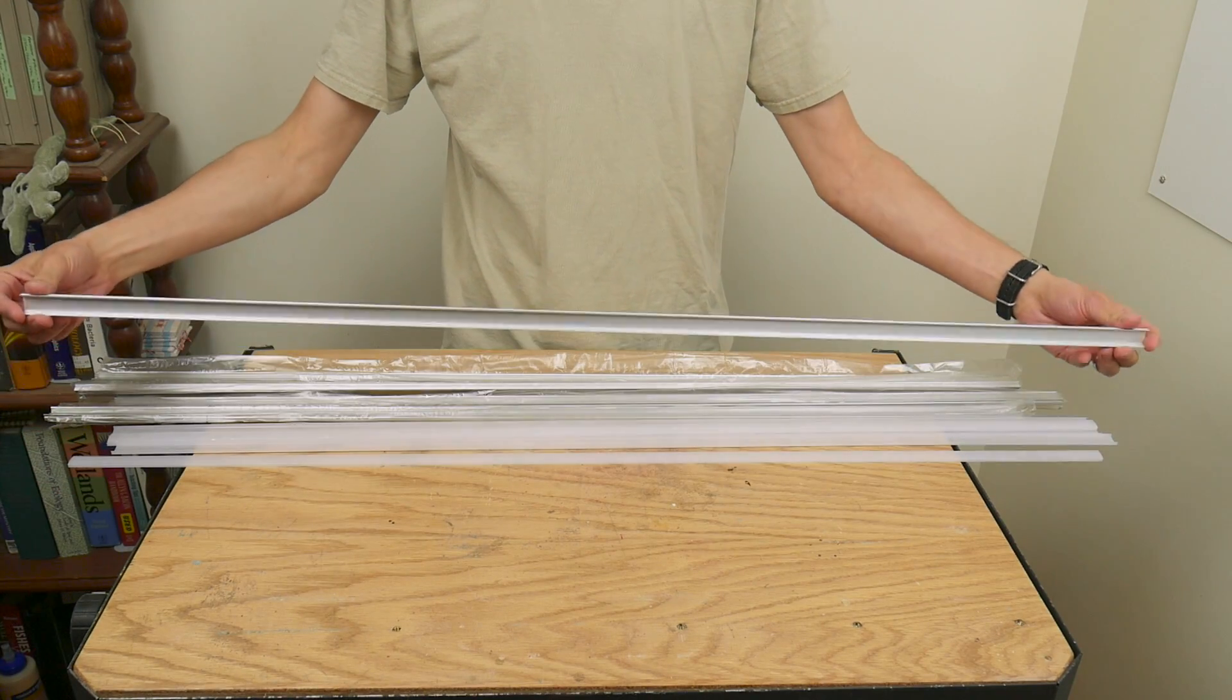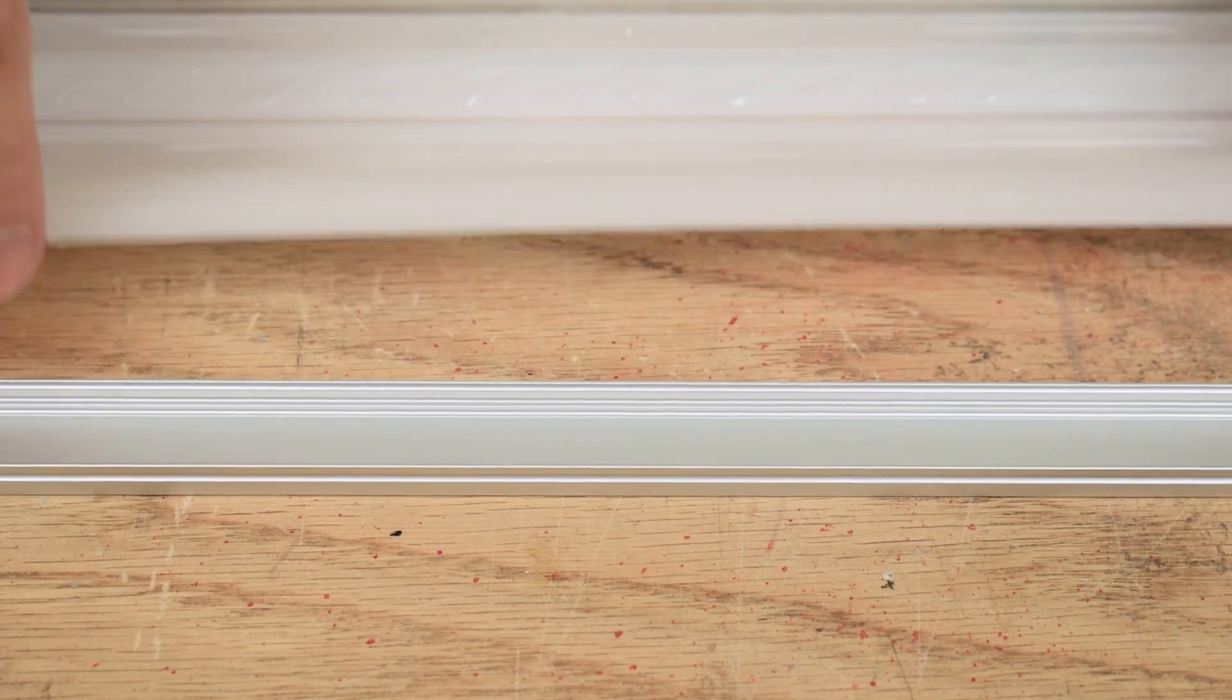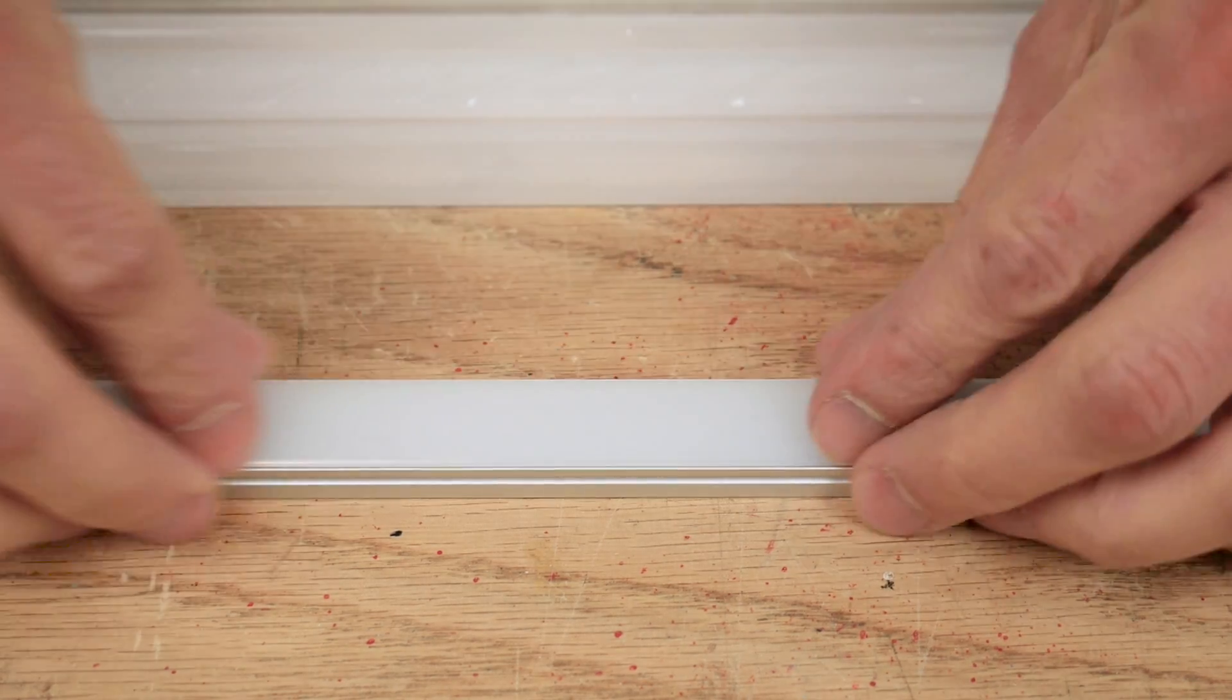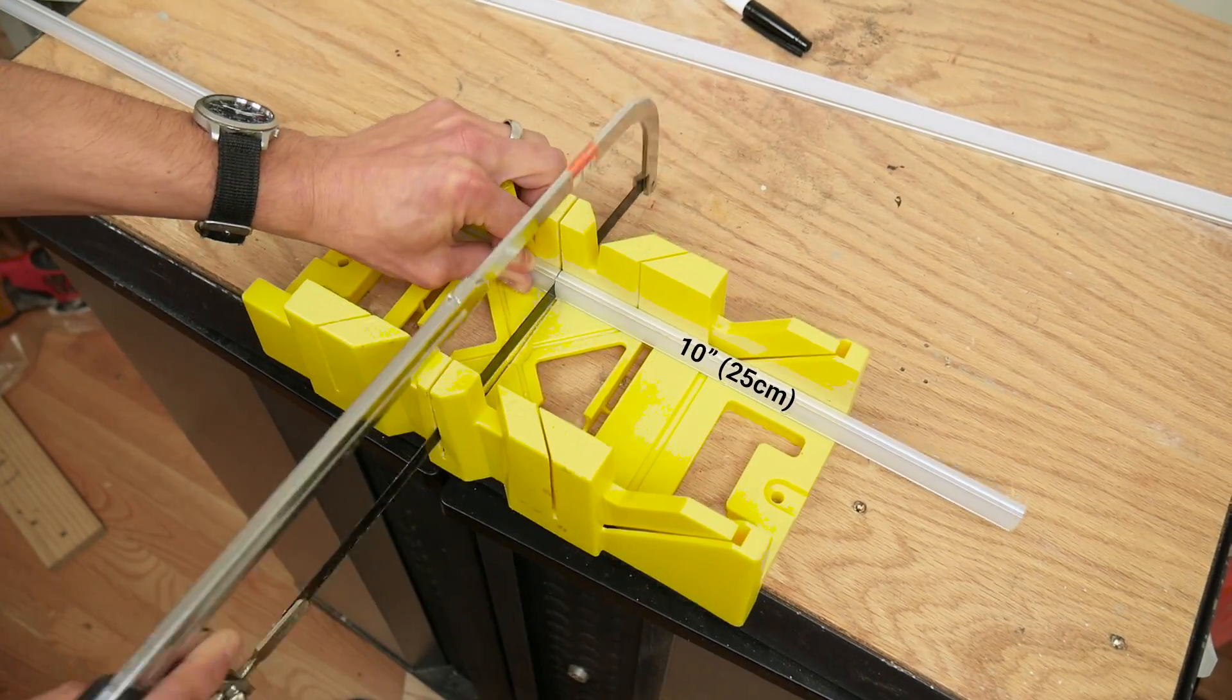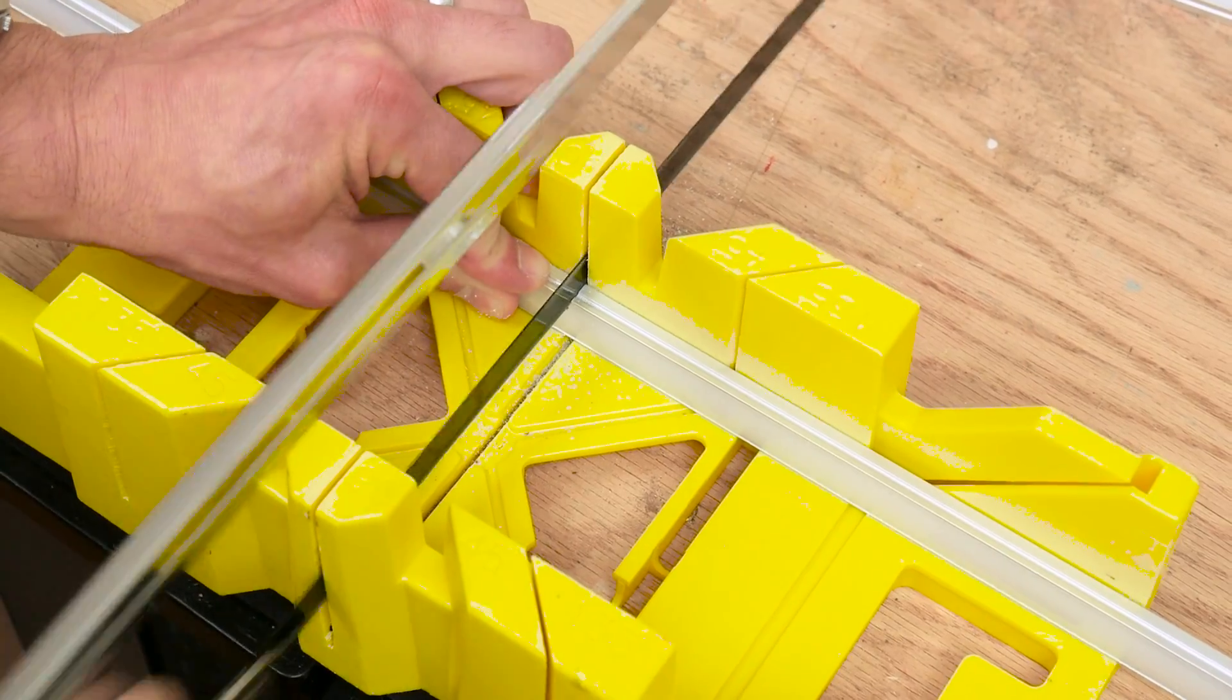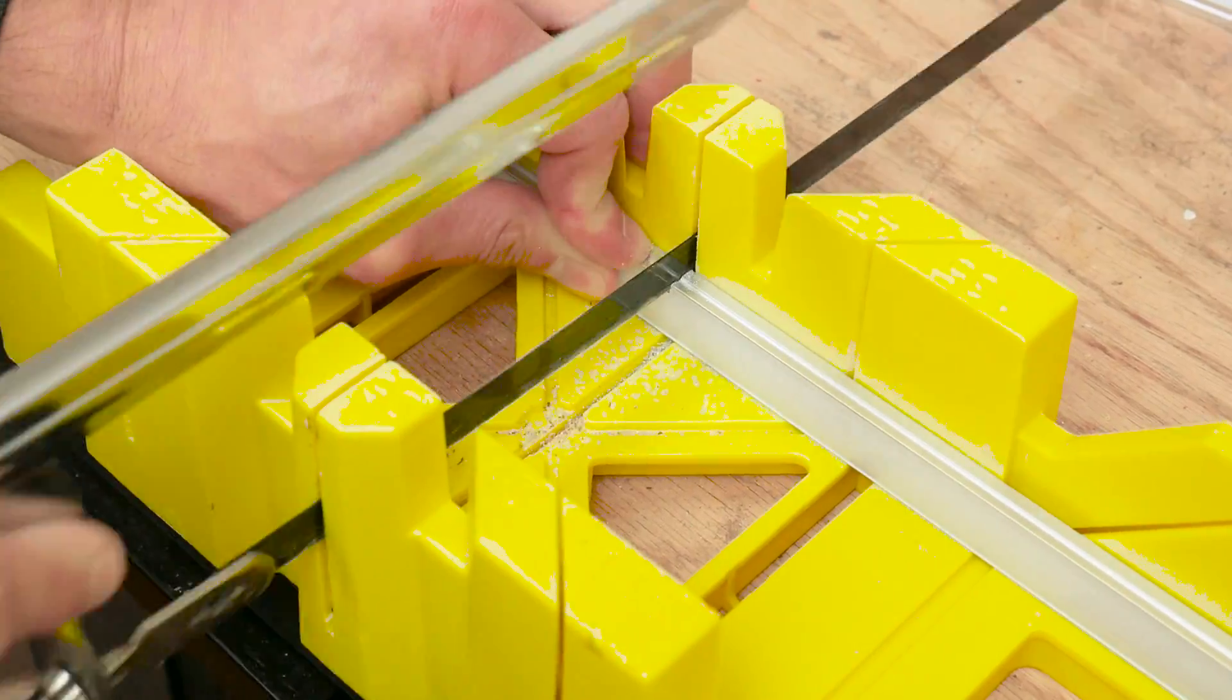The center section of the lamp was made from aluminum channels designed for LED strip lights. This channel comes with a diffuser that snaps into place. I cut five pieces of channel each 10 inches in length. This channel cuts easily and nicely with a hacksaw.